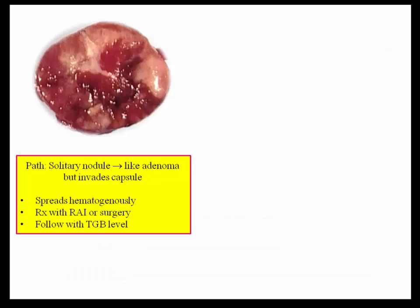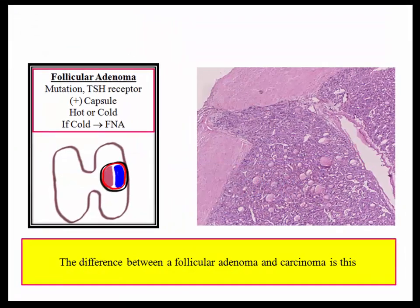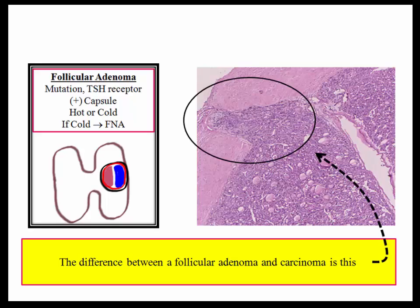Capsular invasion is synonymous with hematogenous spread. Treatment is similar to papillary carcinoma, including excision, administration of radioactive I-131, and serial monitoring with thyroglobulin levels. Pay attention to the image, envisioning the invasion and hematogenous pattern of spread. The key distinction between follicular adenoma and carcinoma is capsular invasion.